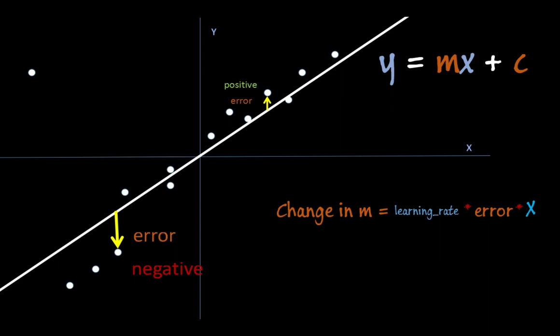Guys, now let's look at how to change C. How to change C — unlike M, there is no effect of X, so change in C is simply learning rate times error. So if the error is negative, change in C will be negative, and if the error is positive, change in C will be positive — so you can move the line to the upper or lower point.